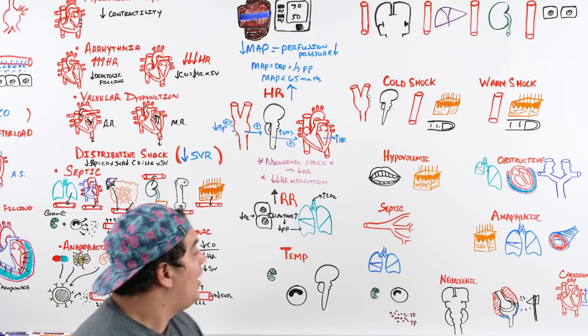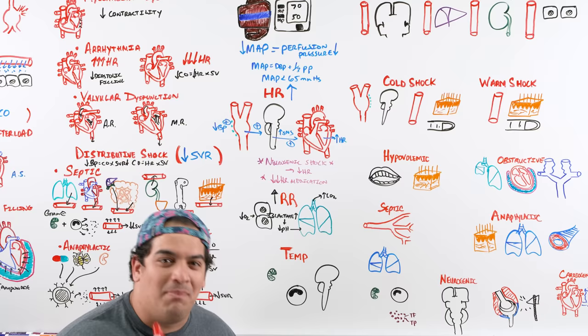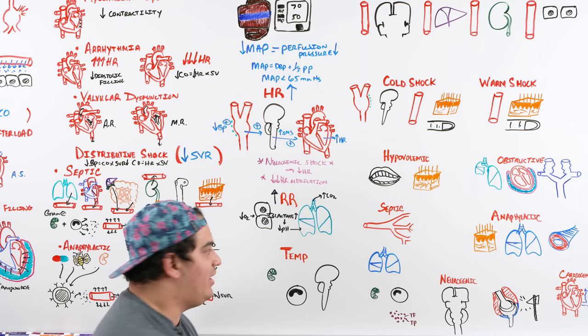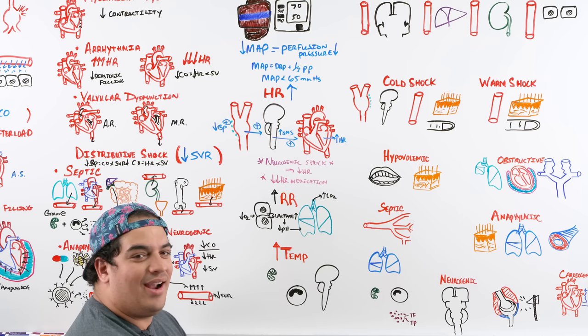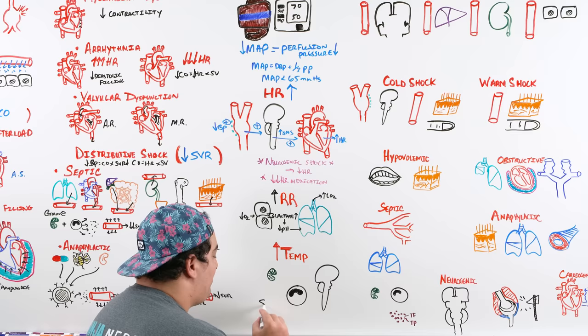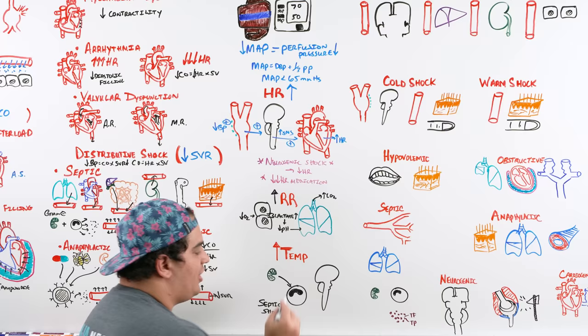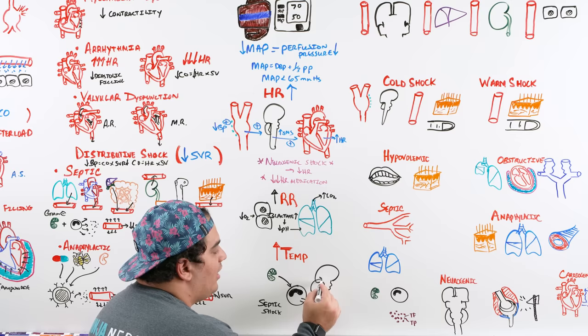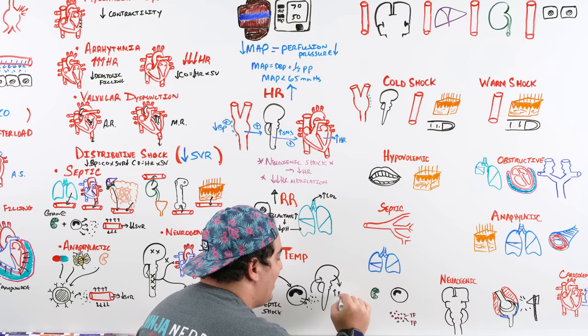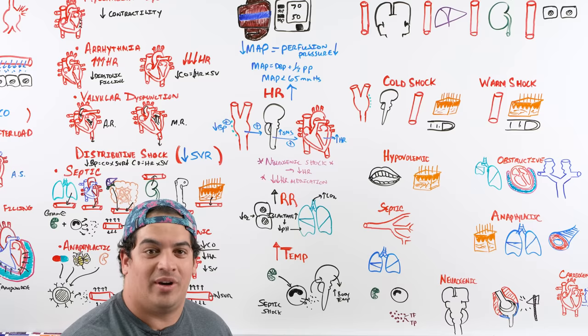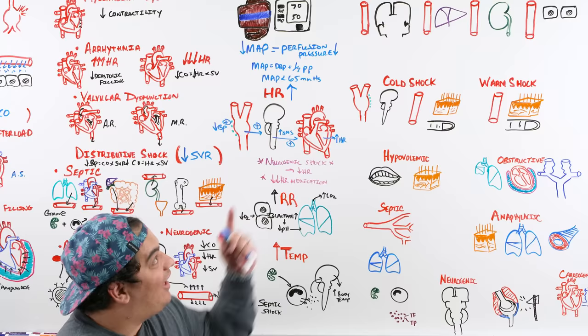Temperature is variable, but a fever is a key cue for septic shock. Pathogens stimulate the immune system to release cytokines, which signal the hypothalamus to raise body temperature, making survival harder for the pathogen. A high temperature in a shock patient should raise suspicion for septic shock.